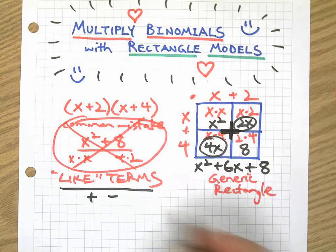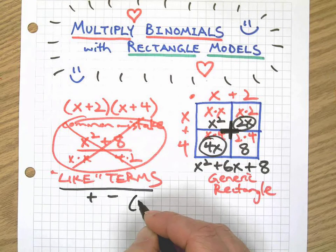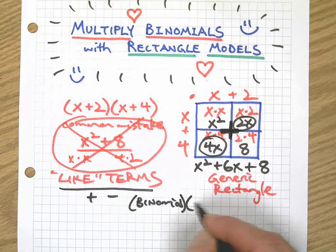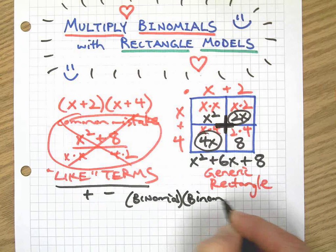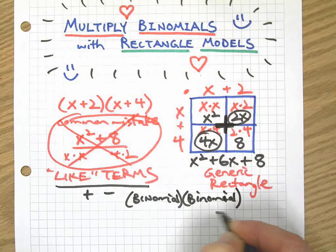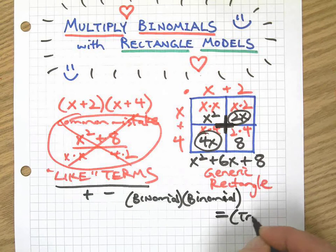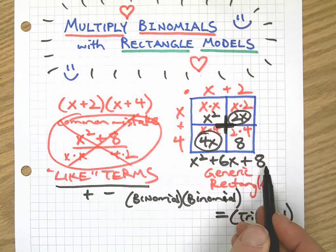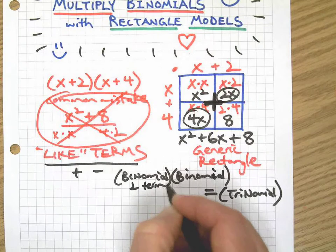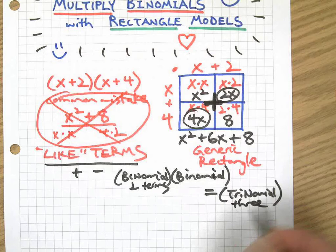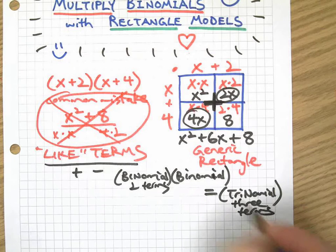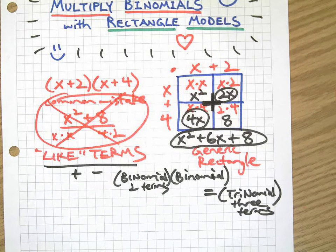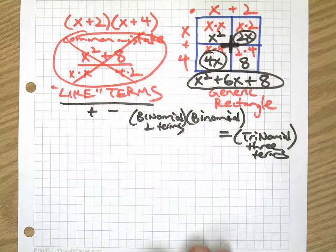So what we end up with here is, if we go in order of power, which you should, there's our new trinomial. So when I multiply a binomial and another binomial, we get a trinomial. There's our answer to that. We used a generic rectangle.